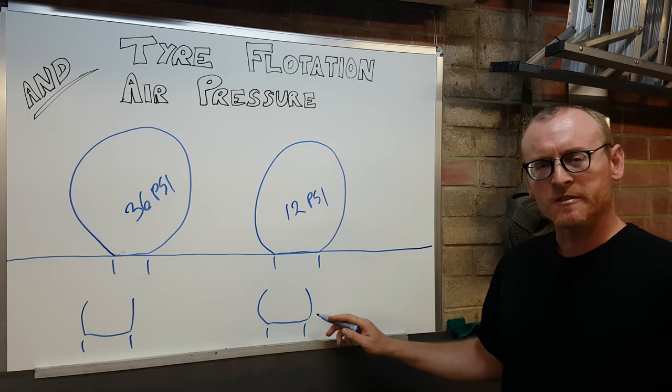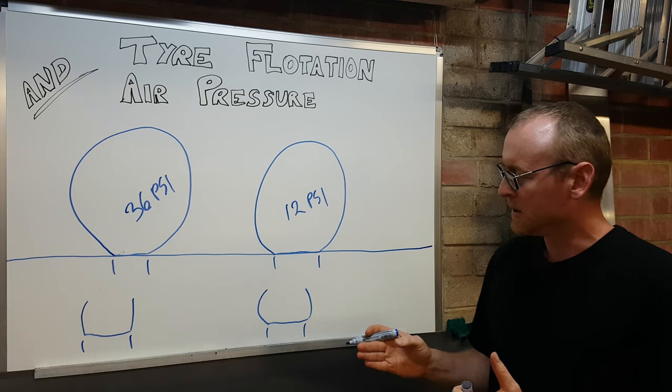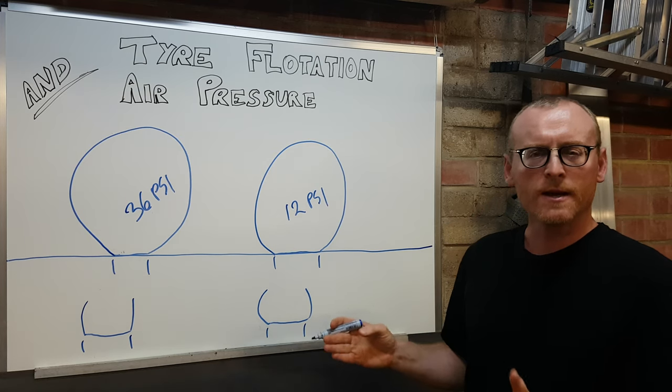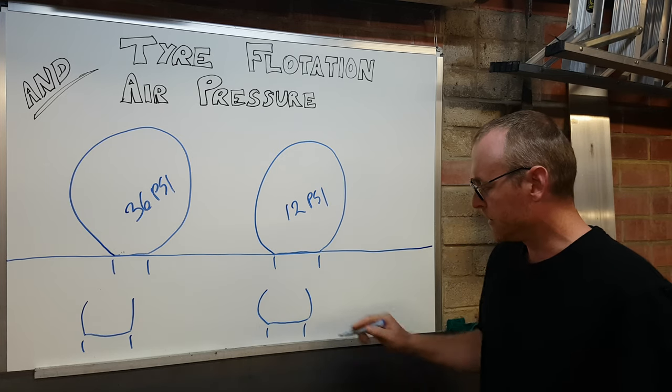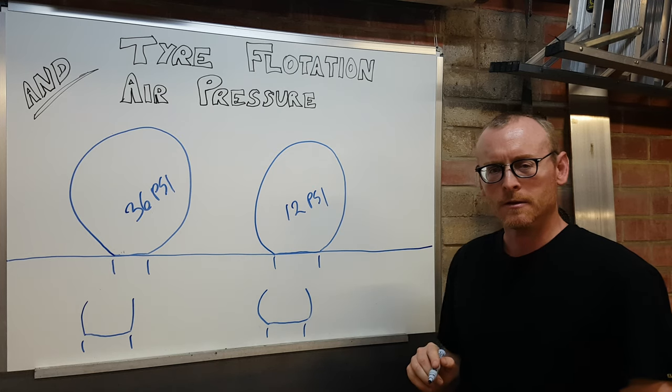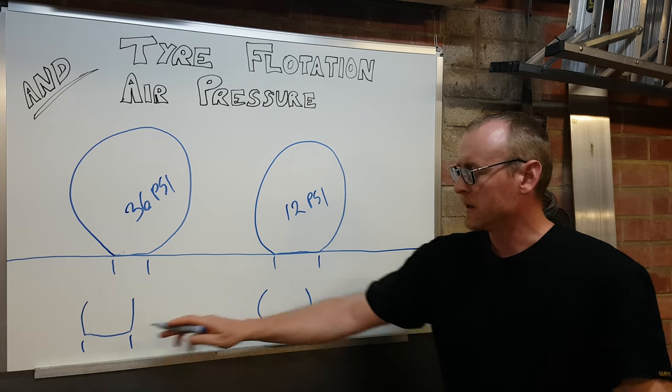But, the tread width is the same. The actual tread width hasn't changed and it's only tread touching the ground. We don't have sidewall bulging around and touching the ground. So the width of the contact patch, it's the same.